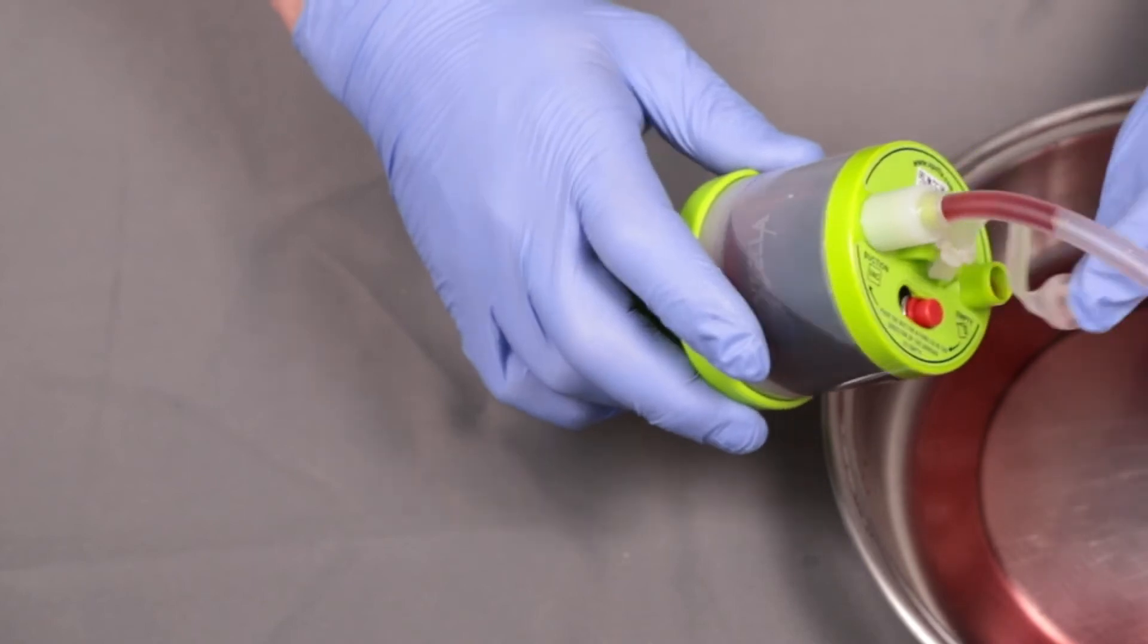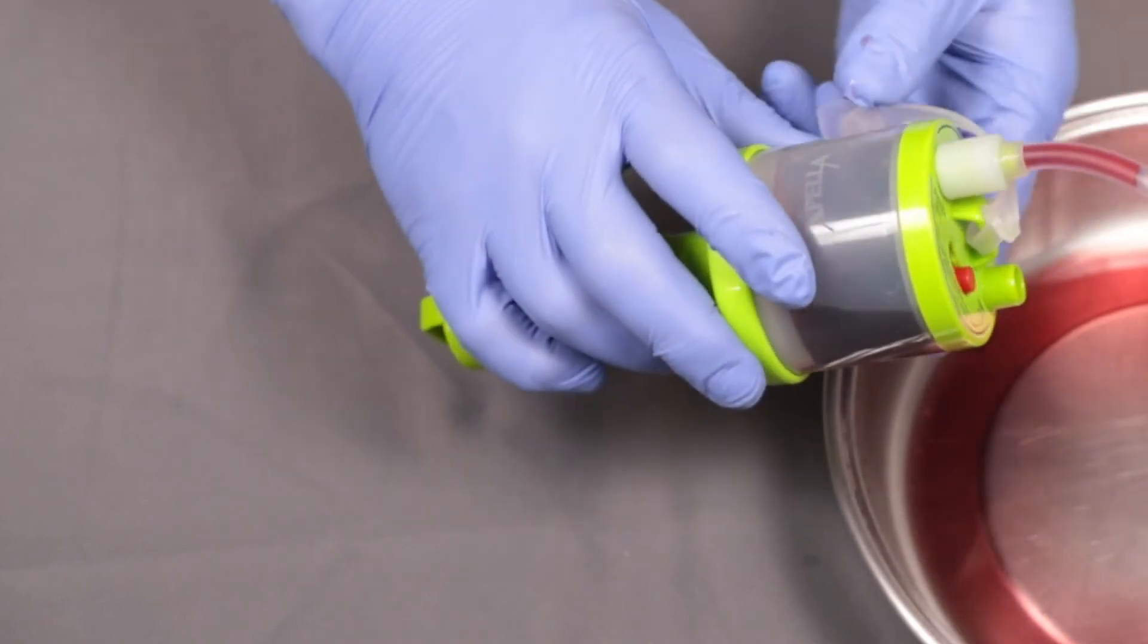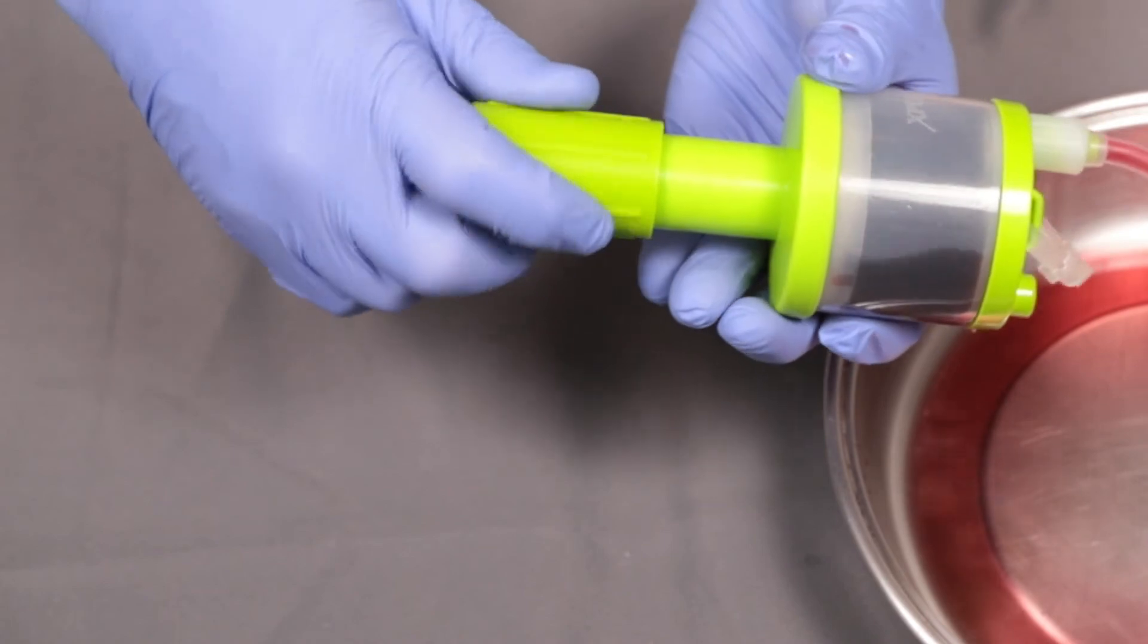Open the plug. Screw the handle towards the reservoir expelling the exudate from the device.